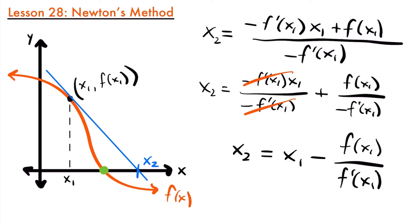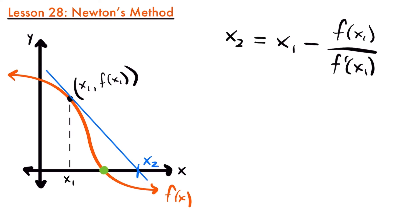So if we want to find the x-intercept of the tangent line from the point we picked on our function, we just take that guess and subtract the function evaluated at that value of x divided by the derivative evaluated at that value of x. Newton's method then repeats this process. We'd look at this function at x2, draw another tangent line, find the x-intercept of that new tangent line, which becomes x3, and keep doing this until we get really close to where the actual x-intercept is.